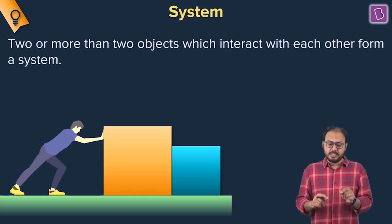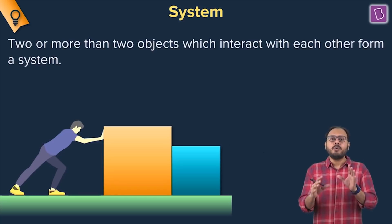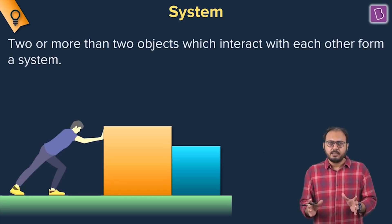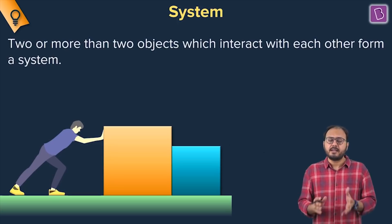In mechanics, this definition is quite useful. Objects which you are looking at, if you combine one with another, that becomes your system. If you make two, three, four together, that's your system.